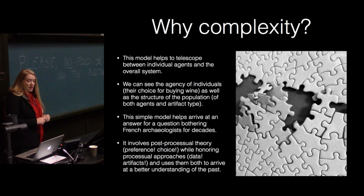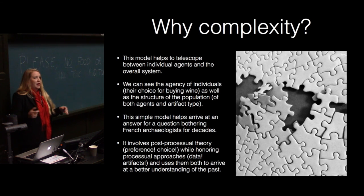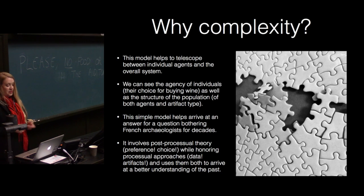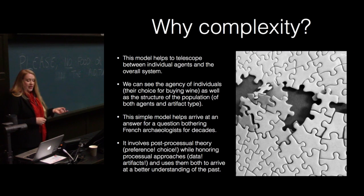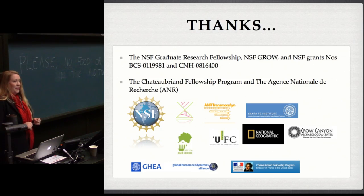So why complexity? This model helps telescope between the individual — the Gaul, the Greek, or the Etruscan — and the overarching system. We can see assemblage-wide change, the agency of individuals and their choices in buying, as well as the structure of the population of both agents and artifact types. This simple model helps us arrive at an answer for a question that has been bothering French archaeologists for a while. Thank you very much.